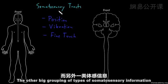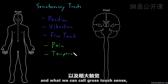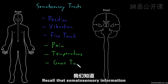The other big grouping of types of somatosensory information that tend to travel together includes the sense of pain, temperature sense, and what we can call gross touch sense, or less precise touch sense information.